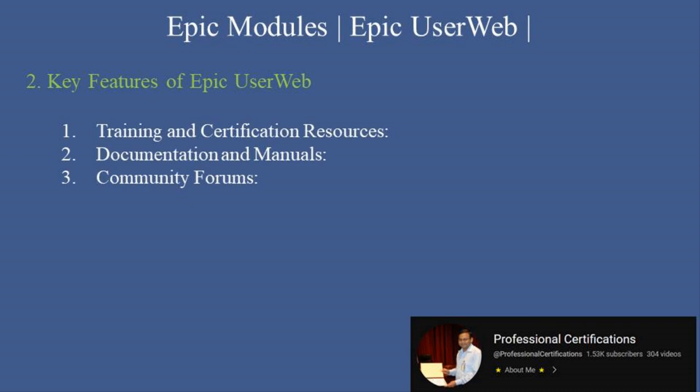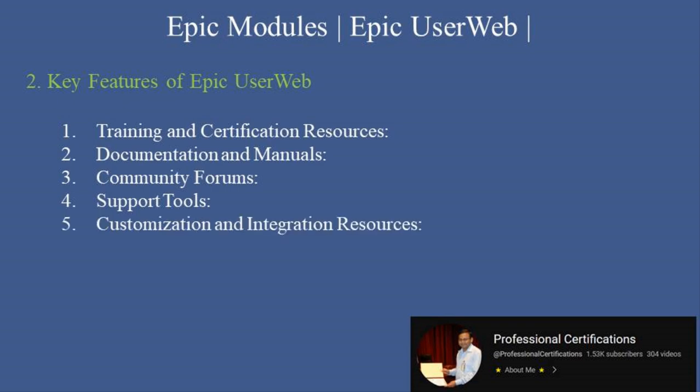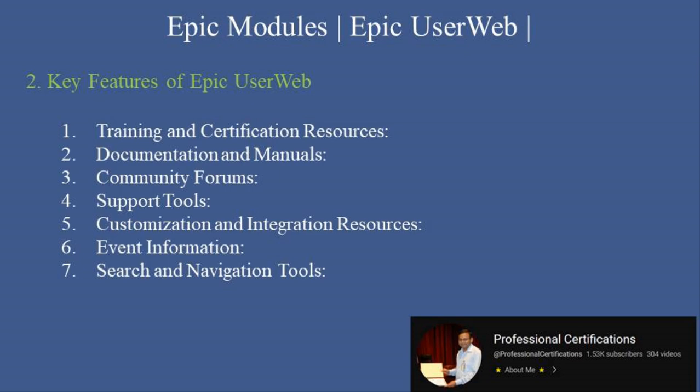Third, Community Forums — collaborate with other Epic users, share tips, and discuss challenges. Fourth, Support Tools — submit support tickets, access troubleshooting guides, and monitor system updates. Fifth, Customization and Integration Resources — learn about customizing Epic workflows and integrating third-party tools. Sixth, Event Information — stay updated on Epic-hosted events, webinars, and user group meetings. Seventh, Search and Navigation Tools — quickly find resources with robust search capabilities and categorized content.